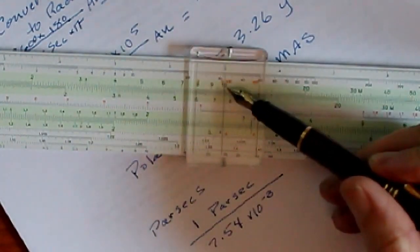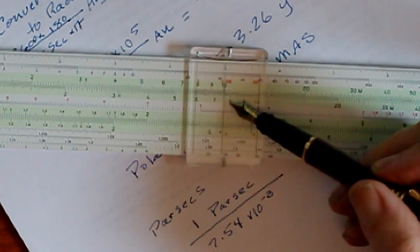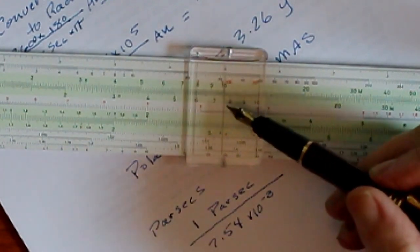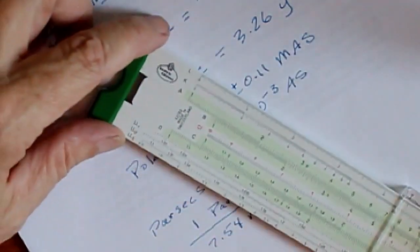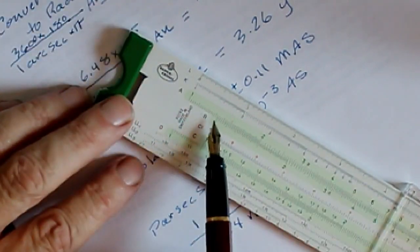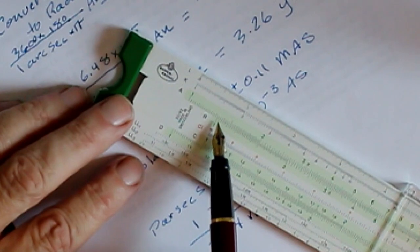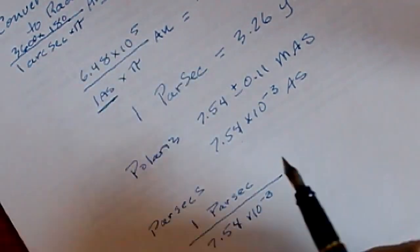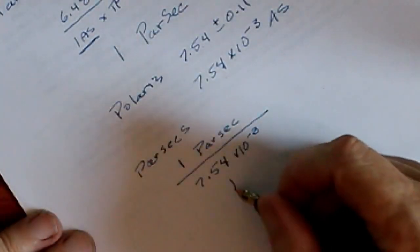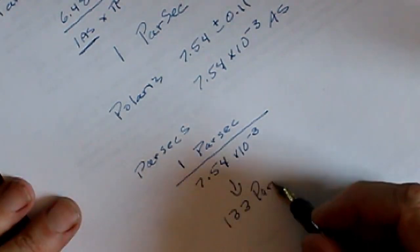So what we'll do is we'll take 1 divided by 7.54. Remember, the number that we're doing something to is on the body of the slide, and the number we're using to do something to it is on the slide. And here's our answer right here. This is 1, 1.1, 1.2, 1.3. And it looks like it's between the second and third increment here. So that would be 133 parsecs. And that is the actual distance to Polaris.